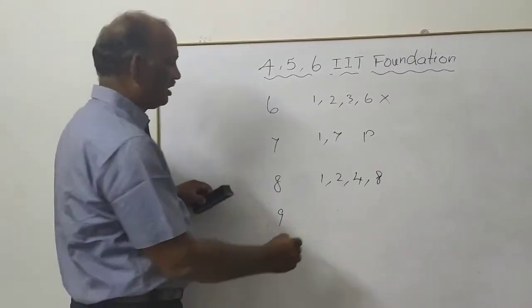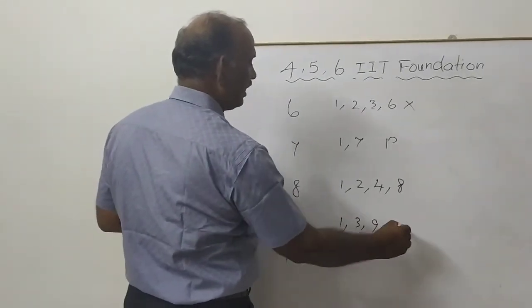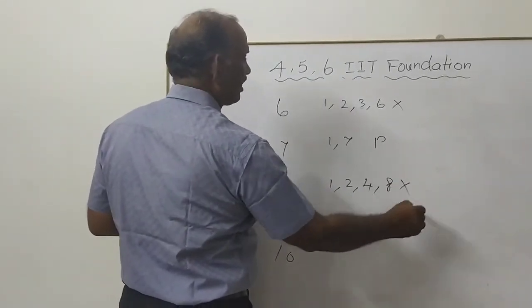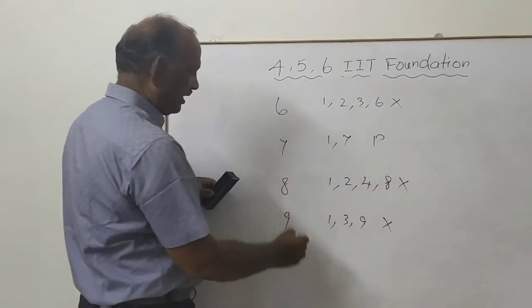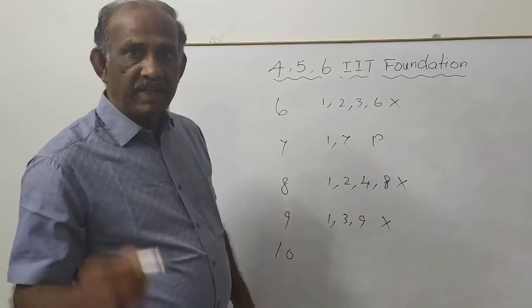Now 9. What are the divisors of 9? 1 is a divisor, 3 is a divisor, 9 is a divisor. It is not a prime number, it is not a prime number. And 10 also, of course, you do by yourself.